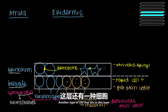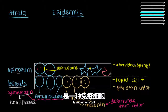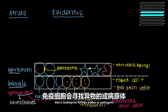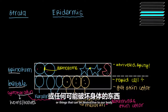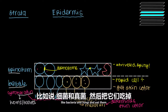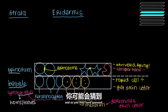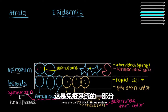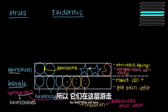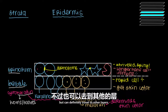Another type of cell that sits in this layer is an immune cell that looks for foreign bodies, pathogens, bacteria, and fungi — and eats them. These are called Langerhans cells, and they are part of our immune system. They hang out here but can definitely travel to other layers.